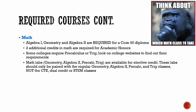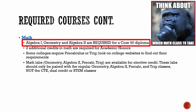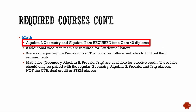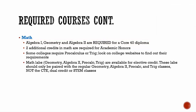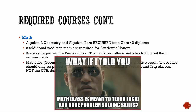Now let's move on to math. For a Core 40 diploma, you must take Algebra 1, Geometry, and Algebra 2. If you've taken all of these courses, you are technically done with your math requirements for the Core 40 diploma, but you still need to take a quantitative reasoning course your senior year.